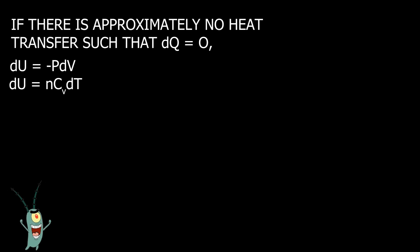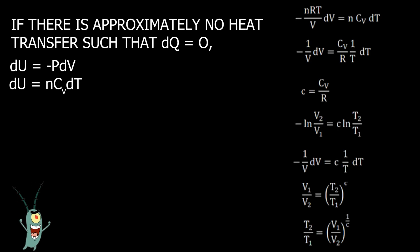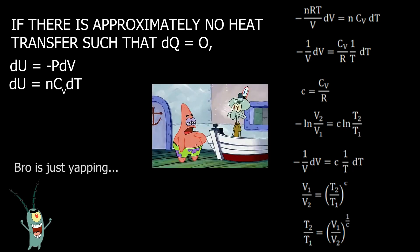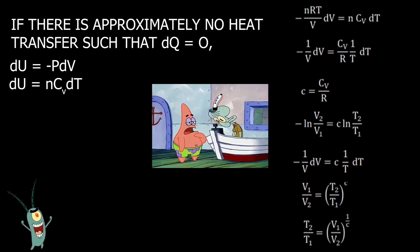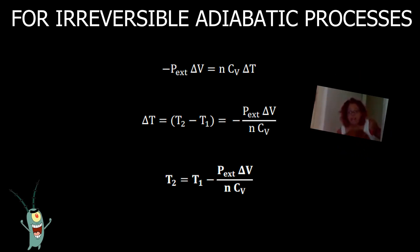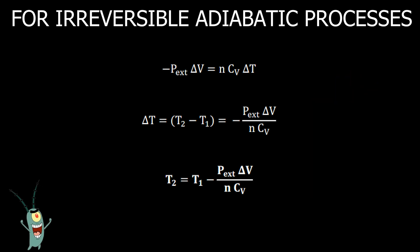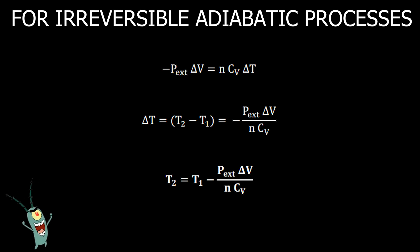Under ideal circumstances, we can see the derivation of the following equation gives the final form: T₂ divided by T₁ equals V₁ over V₂ raised to the power of 1 over C. However, the case of the pistol shrimp is an irreversible process, so the derivation results in T₂ equals T₁ minus the quotient of external pressure times the change in volume, over the number of moles multiplied by the heat capacity.